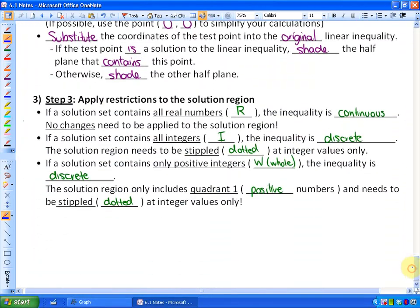Step 3, finally, is to apply any restrictions to the solution region. So if a solution set contains all real numbers, so you might see an R, the inequality is continuous and no changes need to be applied. If the solution set contains integers, so if you see an I, the inequality is discrete, which means, more importantly to the solution region, is that it needs to be stippled or dotted at integer values only.